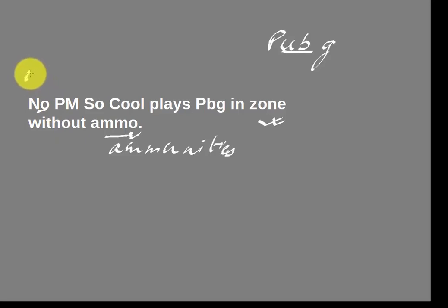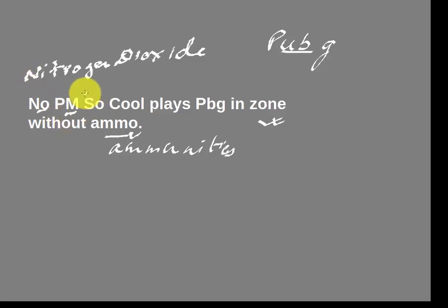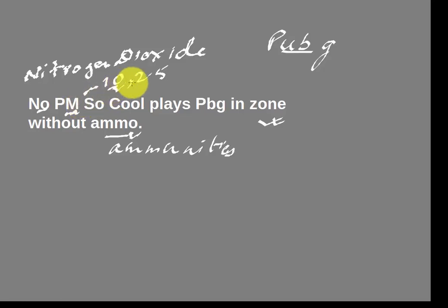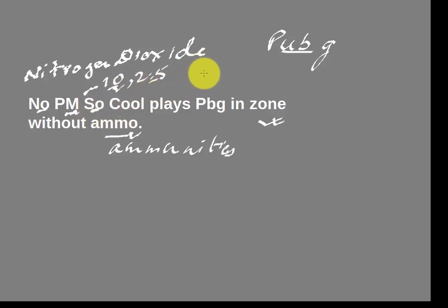From NO: nitrogen dioxide. From PM: particulate matter PM10 and PM2.5. The current PM has already ruled for five years and is selected for another five-year term, so he is going to rule for 10 years — from that you can relate PM10 and PM2.5. From SO: sulfur dioxide. From CO: carbon monoxide. From PUBG — specifically PB: lead.